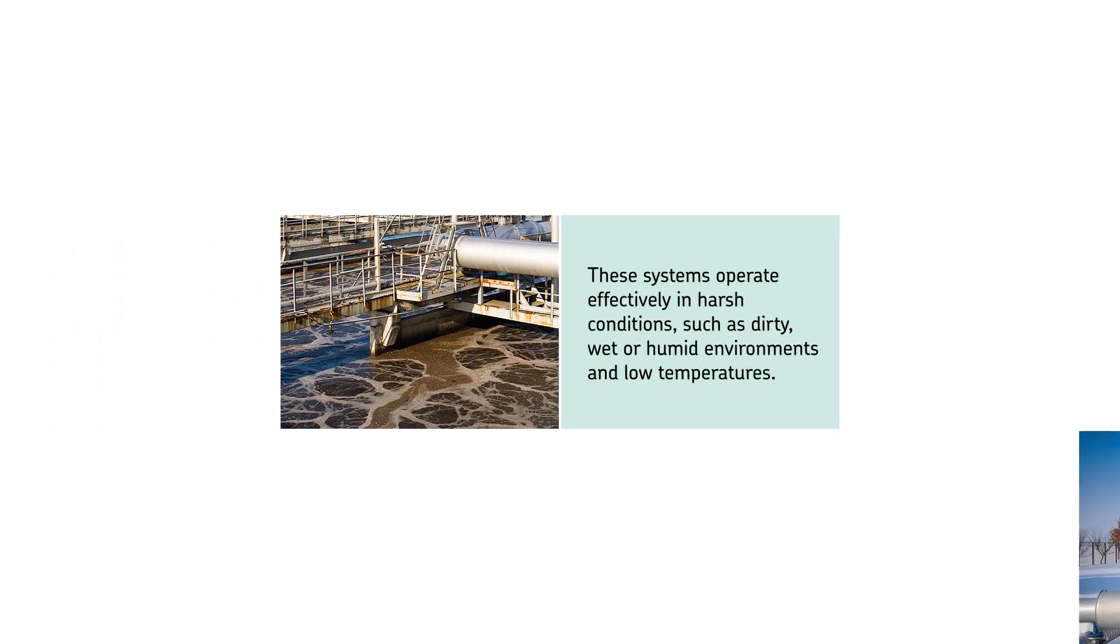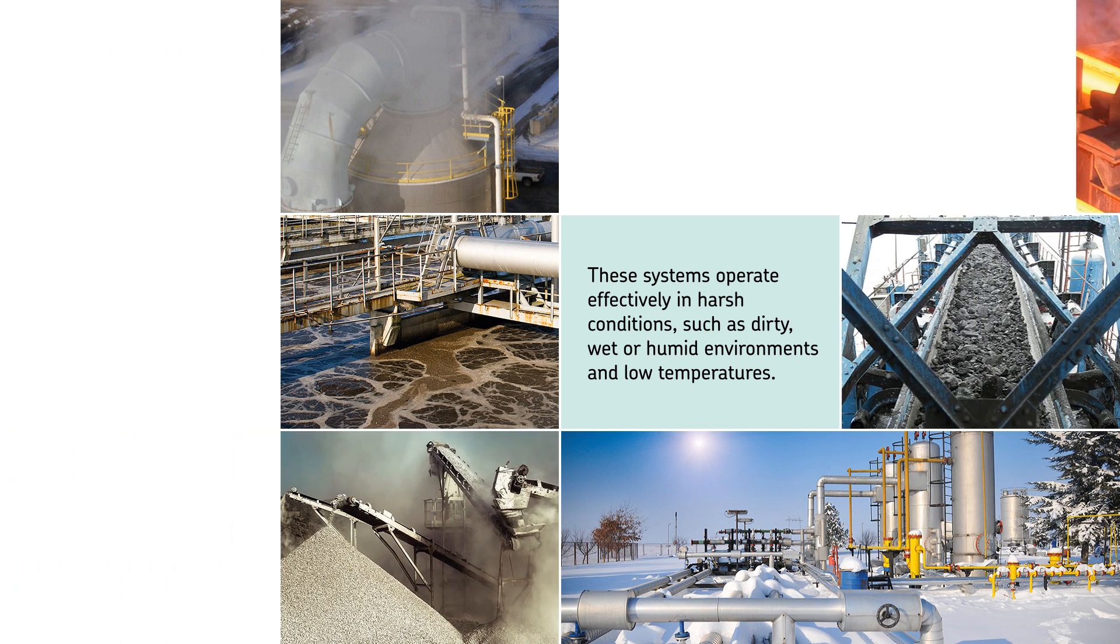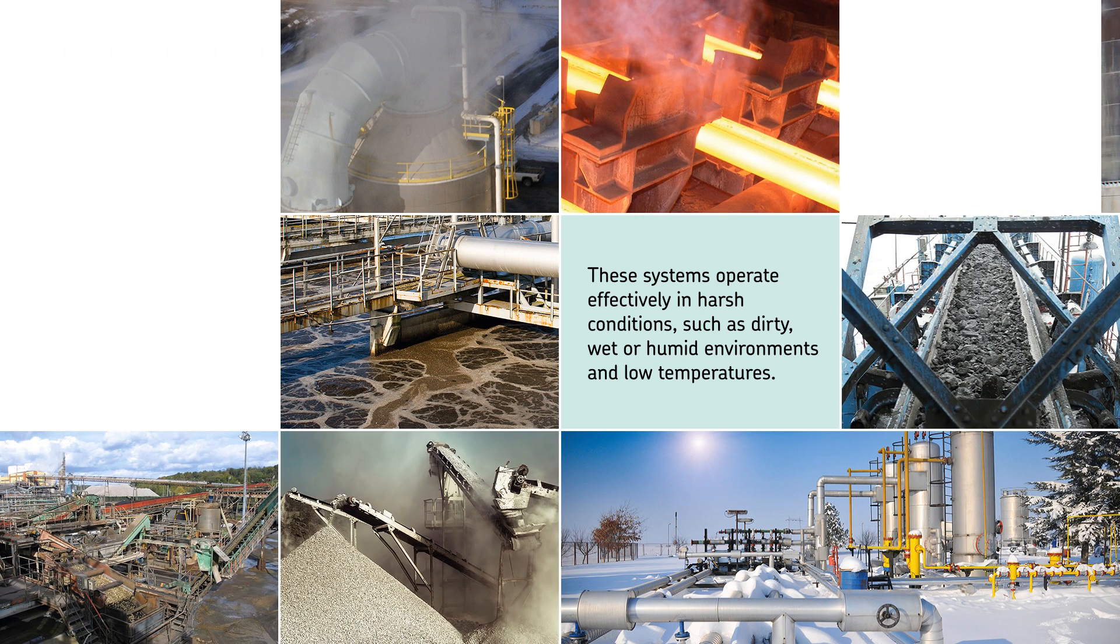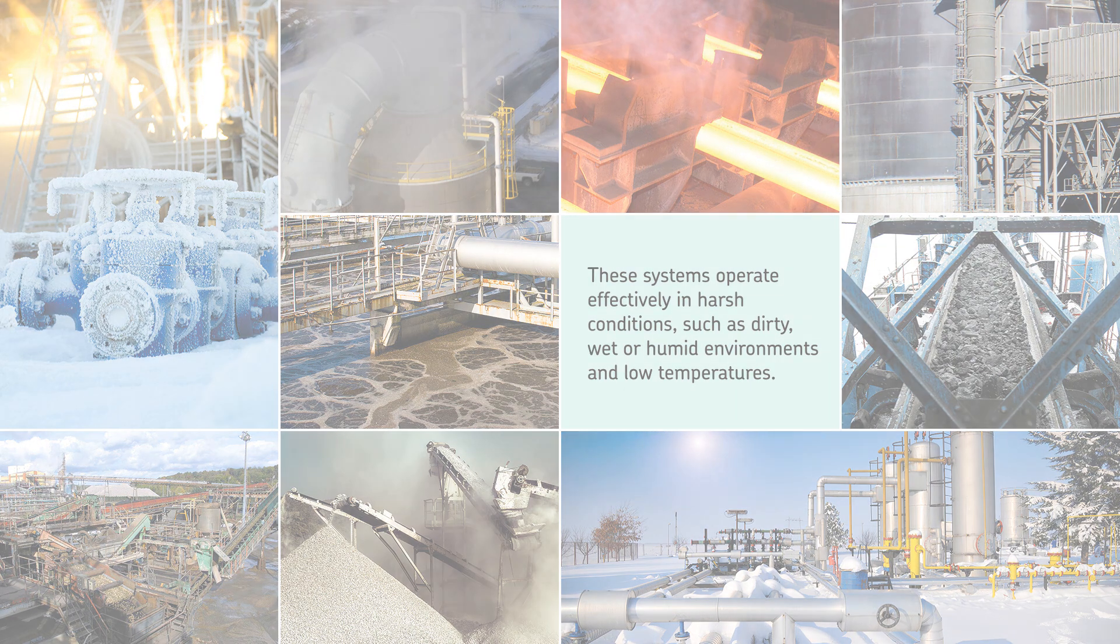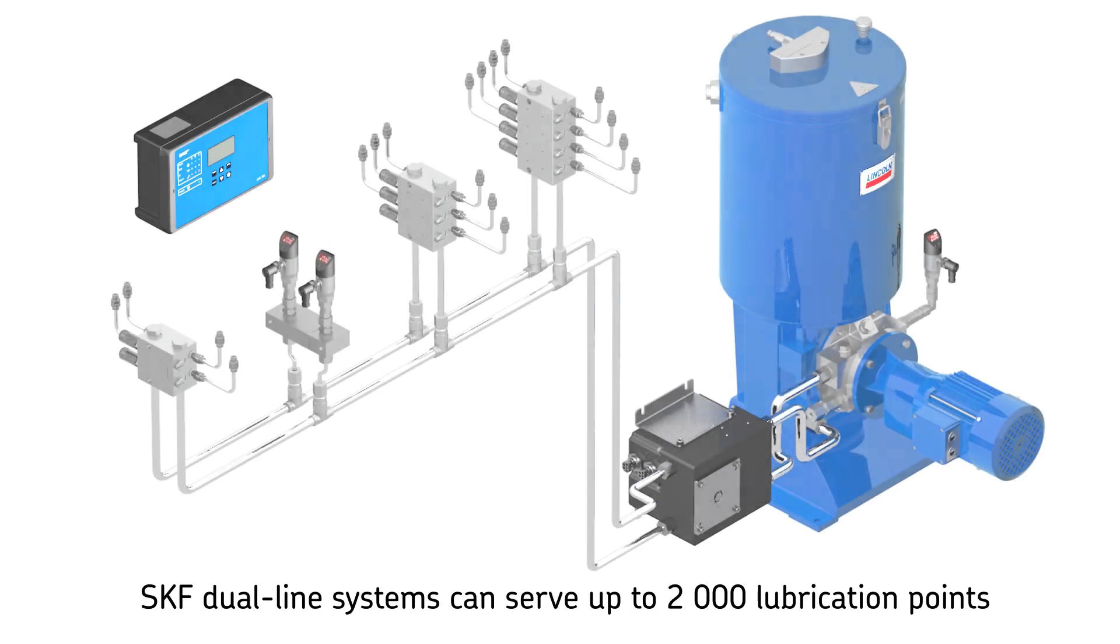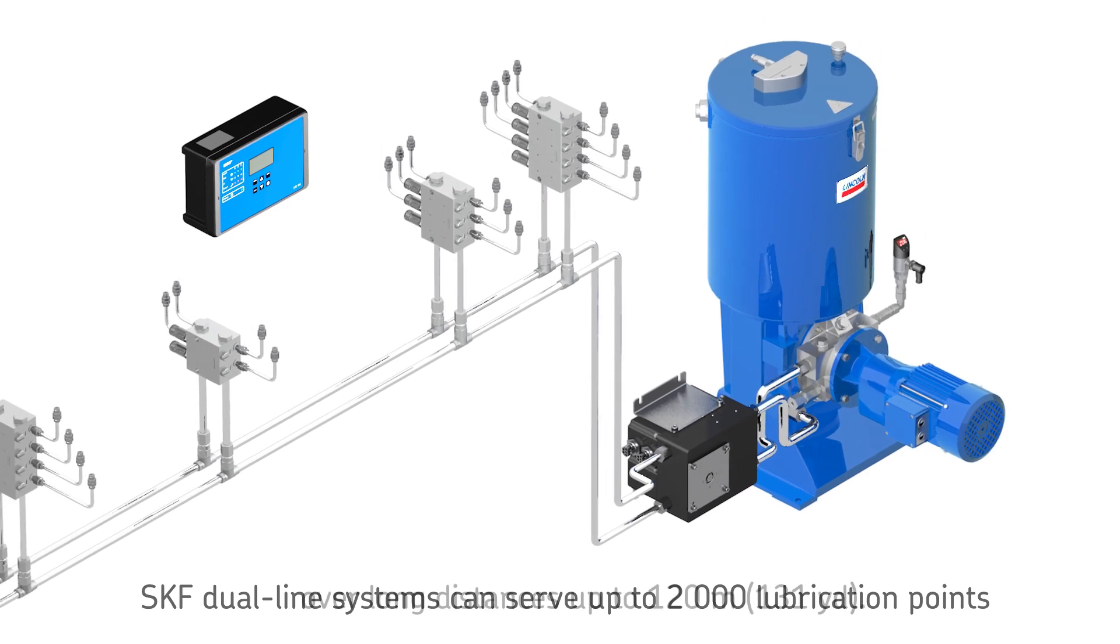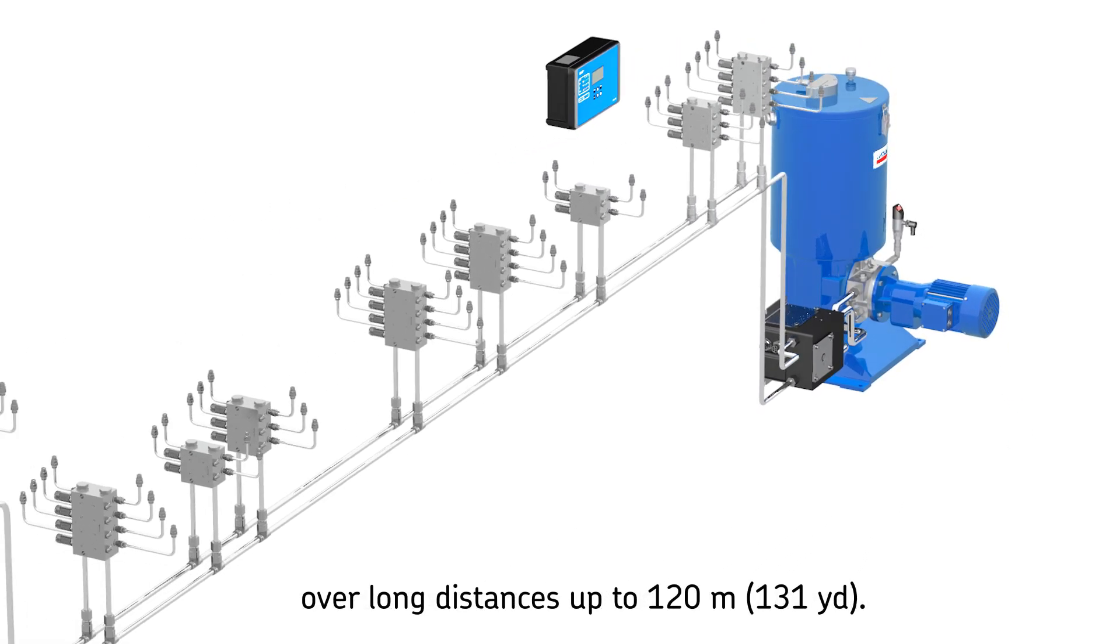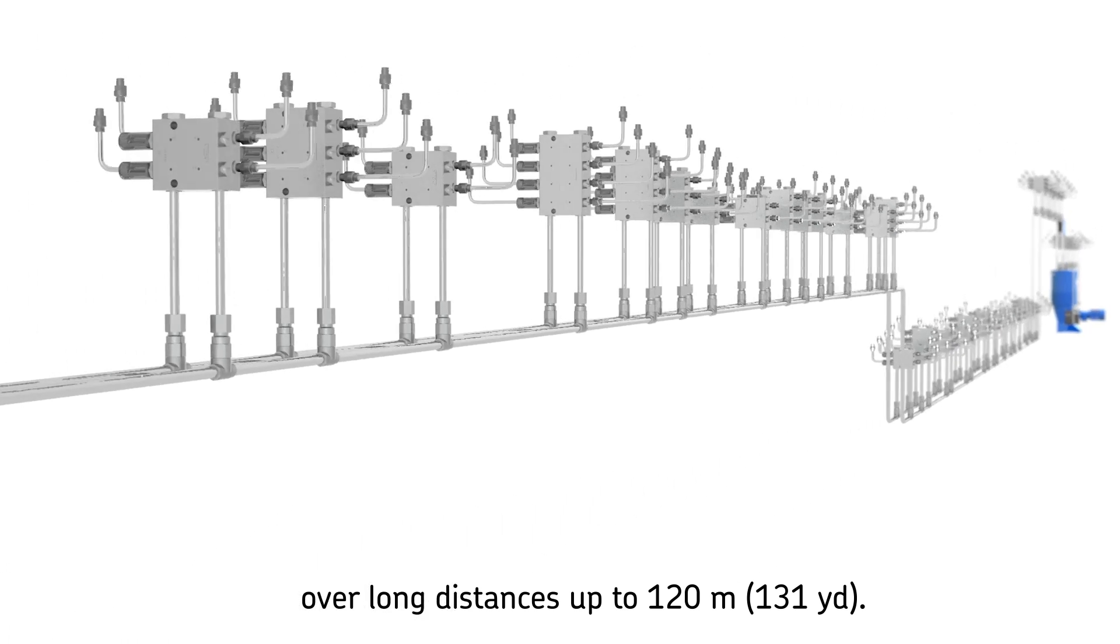These reliable systems operate effectively in harsh conditions including high lubrication point back pressure, dirty, wet or humid environments, and low temperatures. SKF offers dual-line systems that dispense precise metered amounts of lubricant to up to 2,000 lubrication points over long distances up to 120 meters (131 yards) and more.